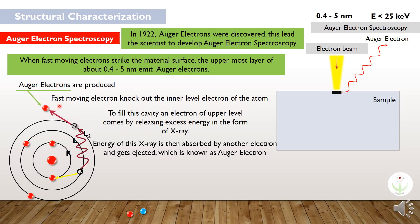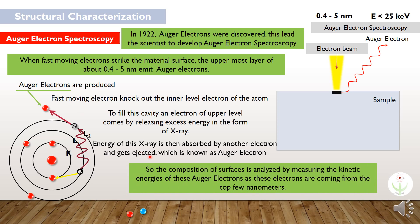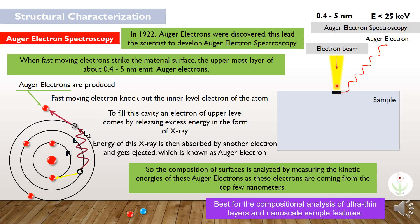So, the composition of surfaces is analyzed by measuring the kinetic energy of these electrons as these electrons are coming from the top few nanometers. So, this technique is best for the composition and analysis of ultra-thin layers and nanoscale sample features.